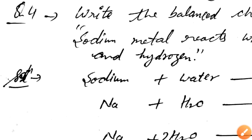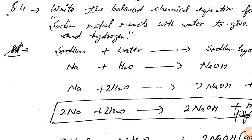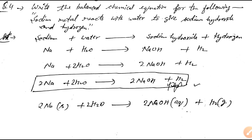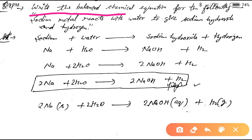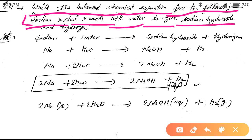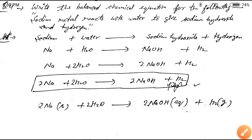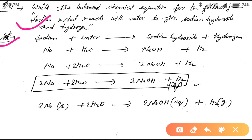This is the fourth question related to the balancing of chemical equations. We need to write the balanced chemical equation for the following statement: sodium metal reacts with water to give sodium hydroxide and hydrogen. First of all, we convert the statement into the word equation.